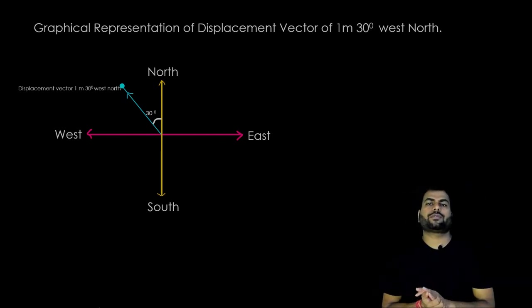Now we will draw displacement vector of 1 meter 30 degrees west north through the graph. Okay, so the discussions we have so far introduce the basics of scalar and vector quantities which will solve our purpose in class 9. You will read the detailed discussion of vectors in your higher classes.